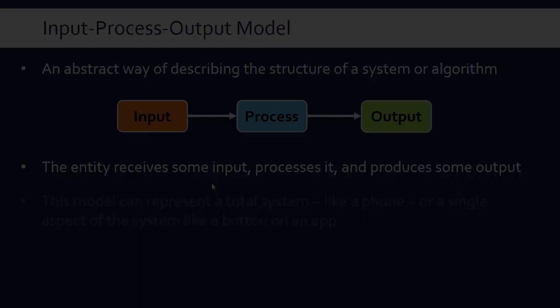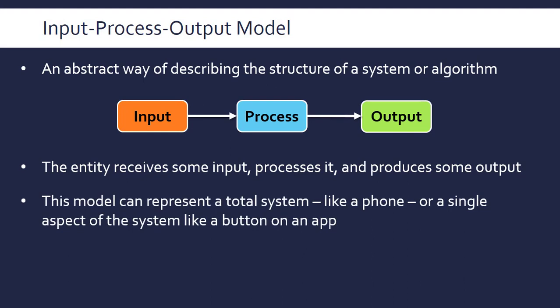The key to understanding this is that it can represent a whole system like a factory or a phone, or it can represent a single aspect of the system like a button on an app that does a very specific process. The amount of actual processing that goes on isn't that relevant. You can think of it as the complete system having loads of these chained together so the output passes to another input for another device or another algorithm.